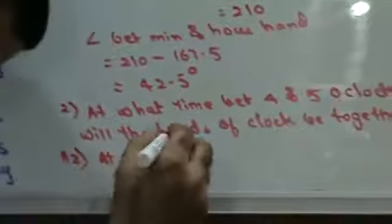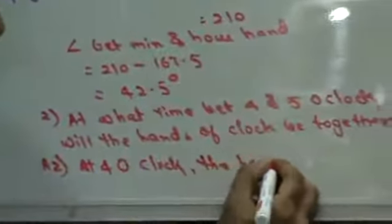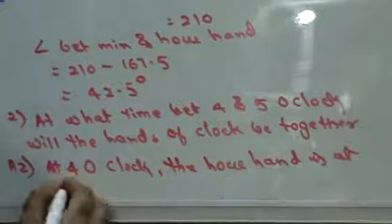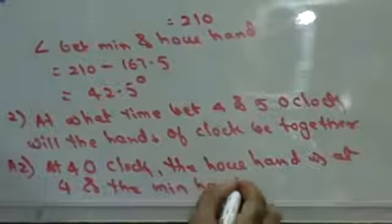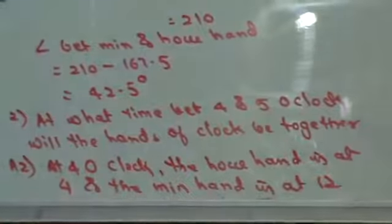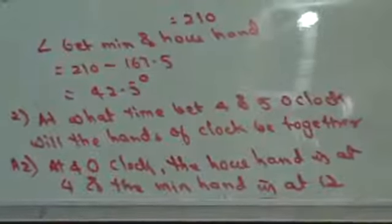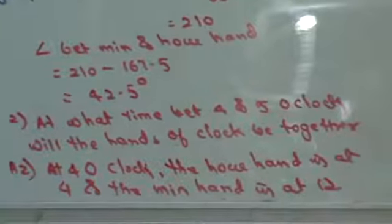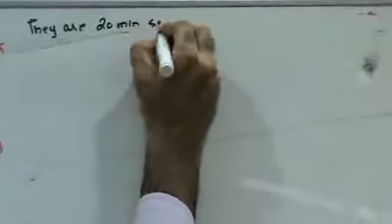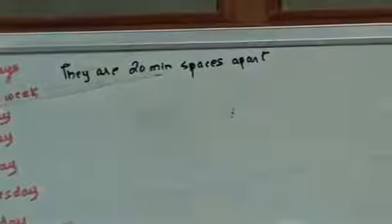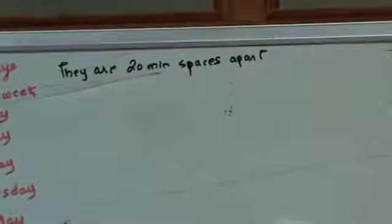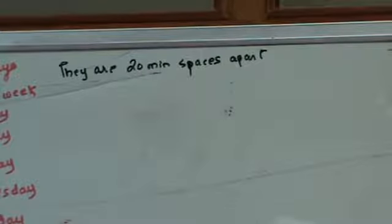At 4 o'clock the hour hand is at 4 and the minute hand is at 12. That means they are 20 minutes spaced apart. To be together, the minute hand should gain 20 minutes on the hour hand — whatever distance the hour hand covers, the minute hand must cover 20 minutes more.